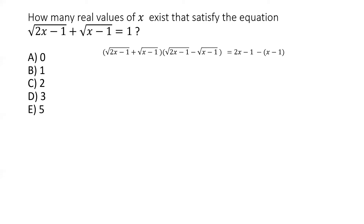The left-hand side of the original equation, √(2x−1) + √(x−1), equals 1. So multiplying the left side by its conjugate gives 1 × [√(2x−1) − √(x−1)], and the right-hand side simplifies to x. Our equation now becomes: √(2x−1) − √(x−1) = x.